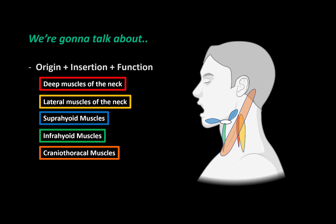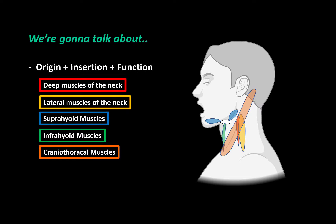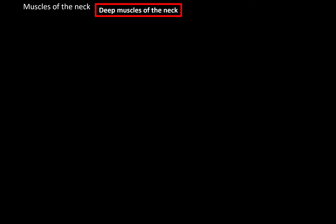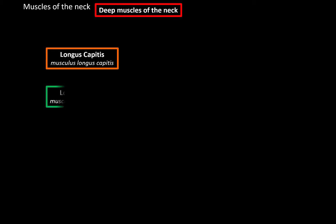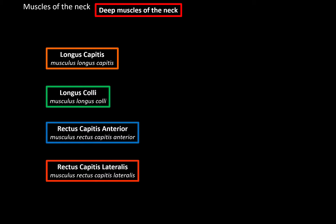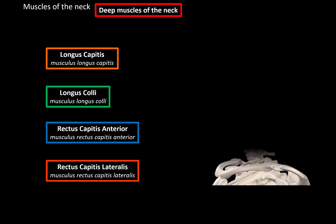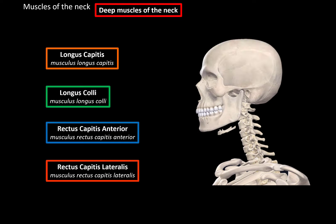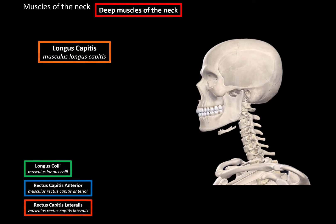We're gonna cover the origin, insertion, and the function of these muscles. We'll start with the deep muscles of the neck. The deep muscles of the neck are the longus capitis, longus colli, rectus capitis anterior, and the rectus capitis lateralis. Let's now add the skeleton for the outline and start with the longus capitis.